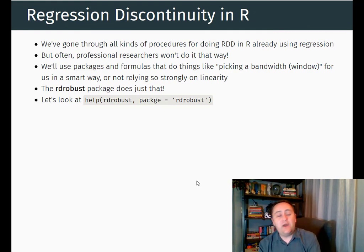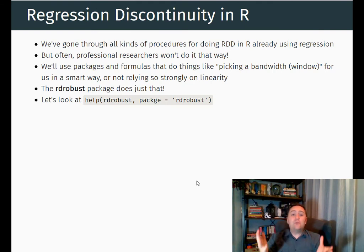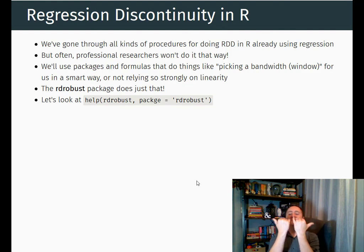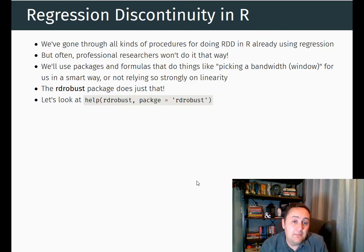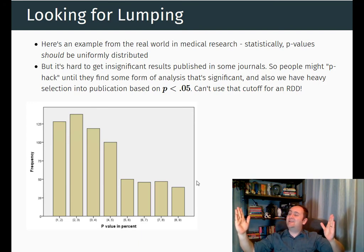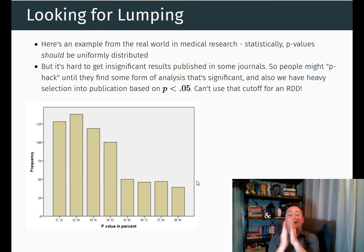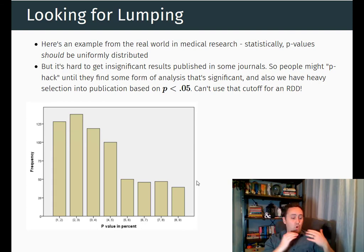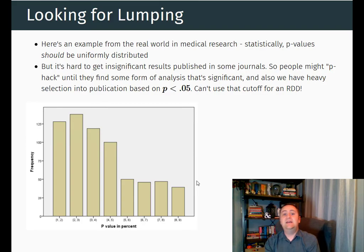Those are the additional things we need to think about when doing regression discontinuity: granular running variables — can we really say things are the same on either side when we have big chunks of people grouped together; windows — how big an area around the cutoff to look at, trading statistical precision for confidence in the random assignment assumption; and fuzzy regression discontinuity — going from some treatment to more treatment and adjusting our estimate accordingly.